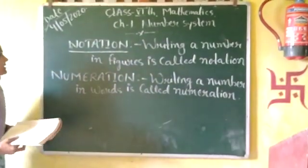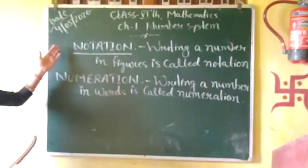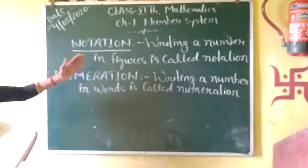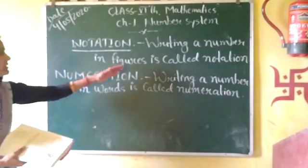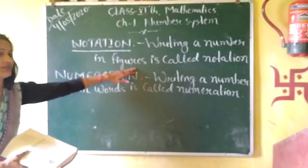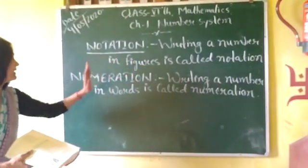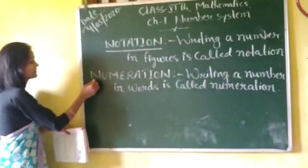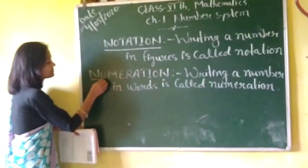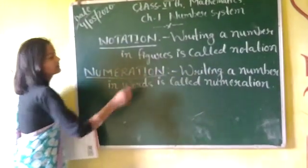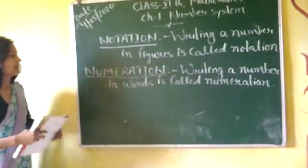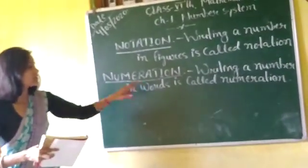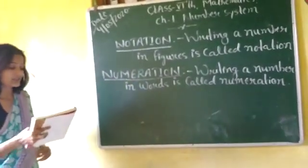Children, you know about notation and numeration. Notation means writing a number in figures. And next, numeration — numeration means writing a number in words. It is called numeration.